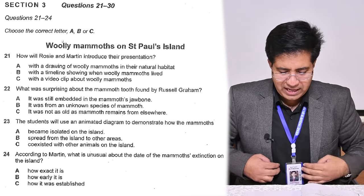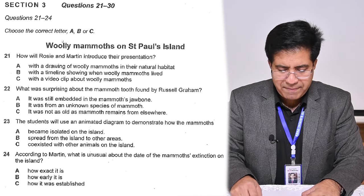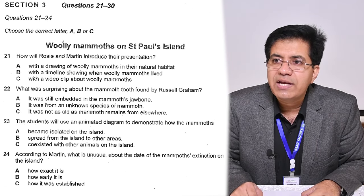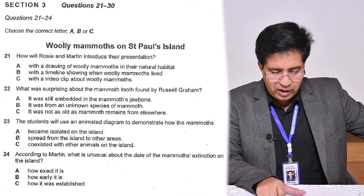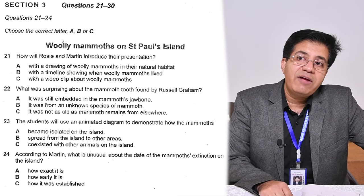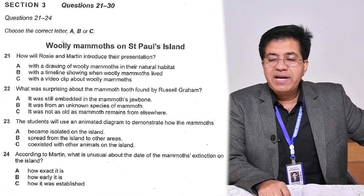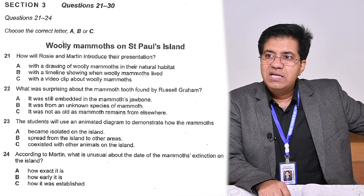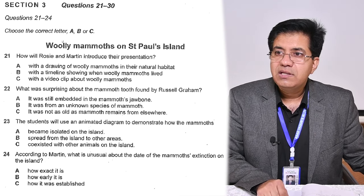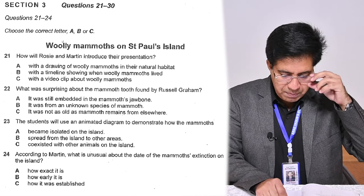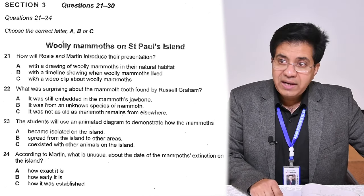Question 23: students will use an animated diagram to demonstrate how the mammoth — Option A: became isolated on the island. Option B: separate from the island to other areas — spread to other areas. Option C: coexisted with other animals. Became isolated, spread, or coexisted — focus on the verb. Question 24: according to Martin, what is unusual about the date of the mammoth's extinction on the island?